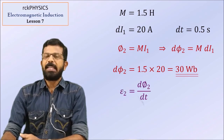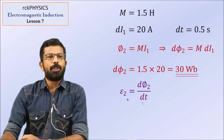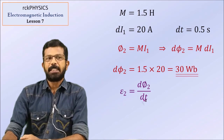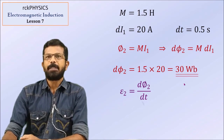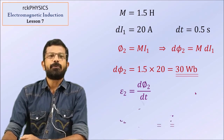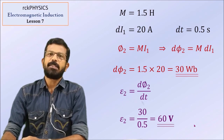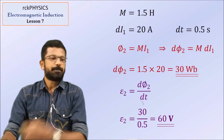What is the EMF induced? EMF induced in coil 2 is equal to the rate of change of flux associated with it: D phi2 by Dt. D phi2 is 30 Weber and Dt is 0.5 second. The answer comes out to be 60 Volt.